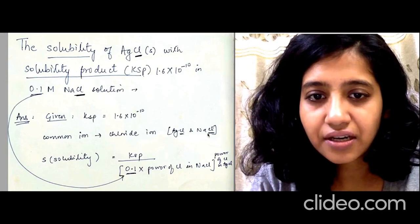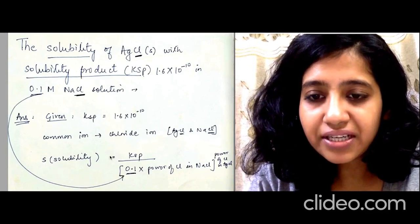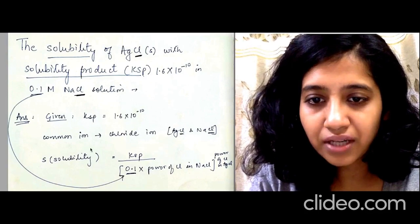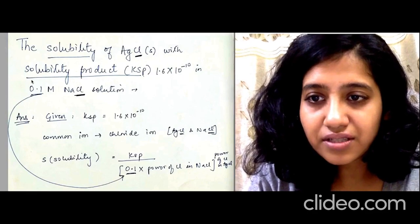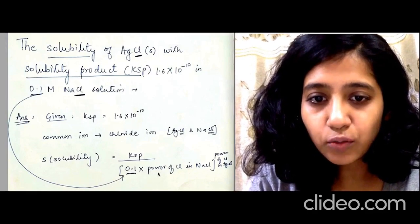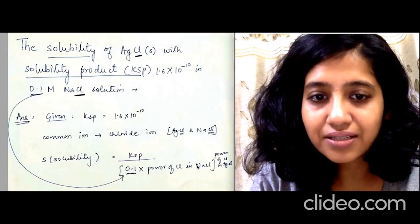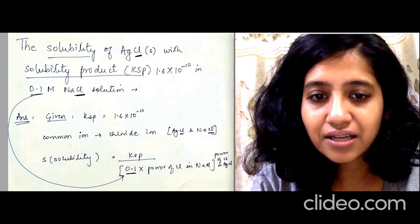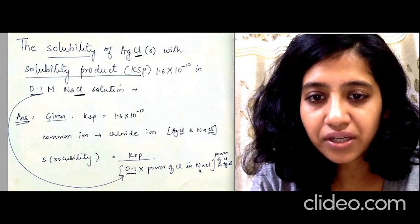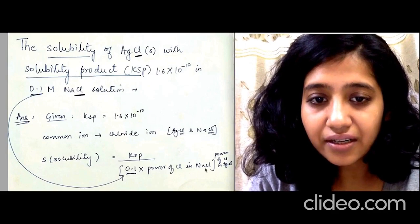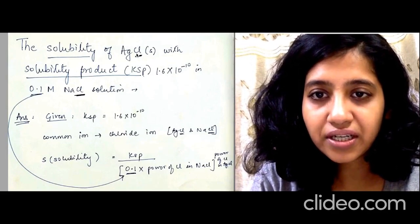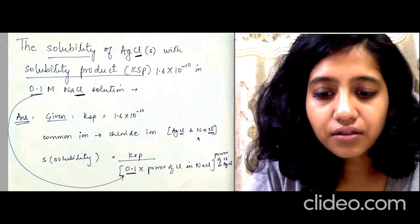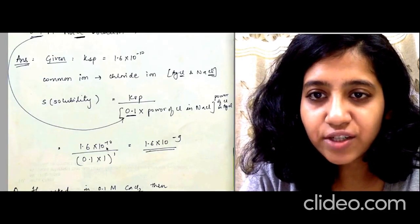I have written here: solubility equals Ksp. This is the formula I want you to remember: Ksp upon 0.1, because this is the molarity concentration, raised to power of chlorine in NaCl. What is the power of chloride in NaCl? Only one ion of chlorine, right. Raised to power of chlorine in AgCl.